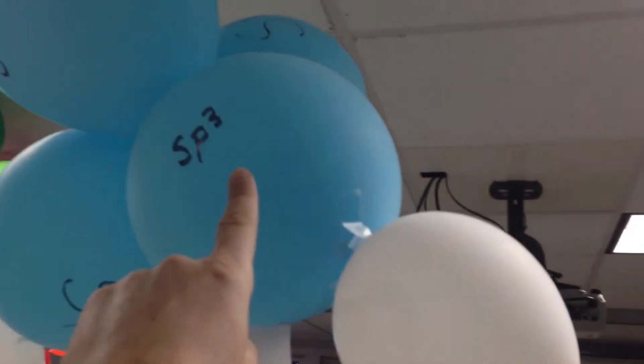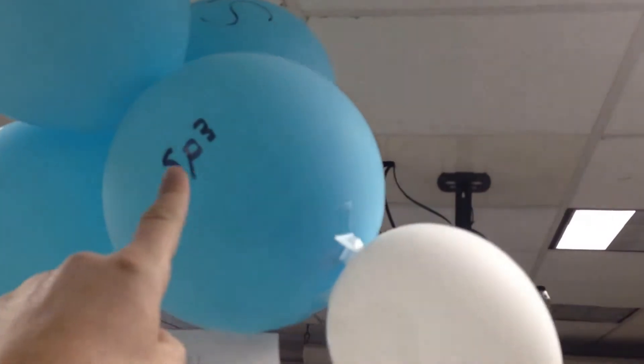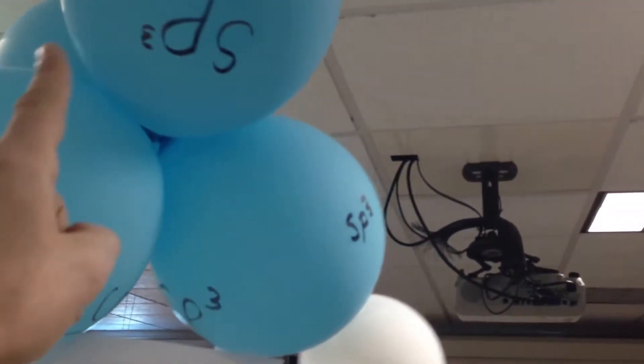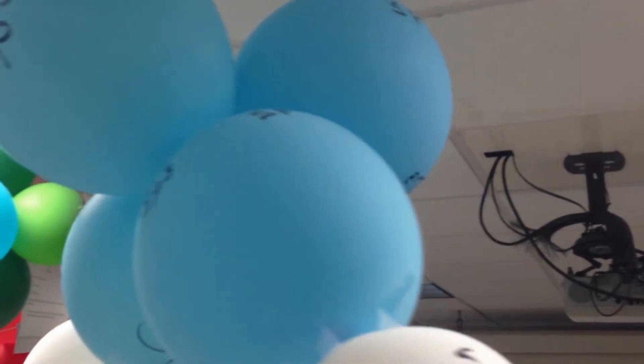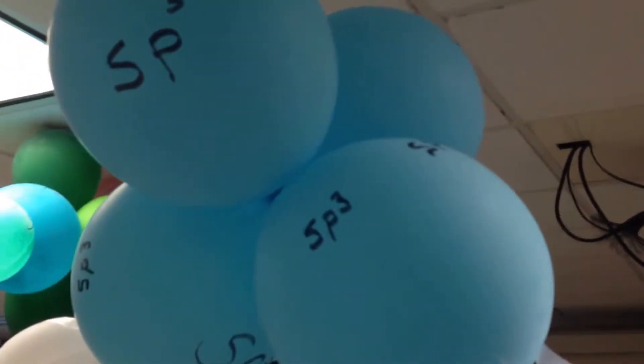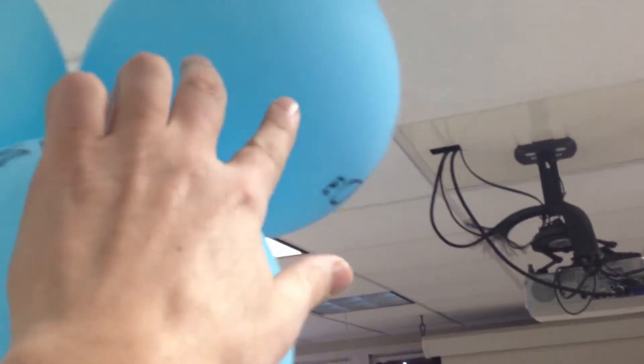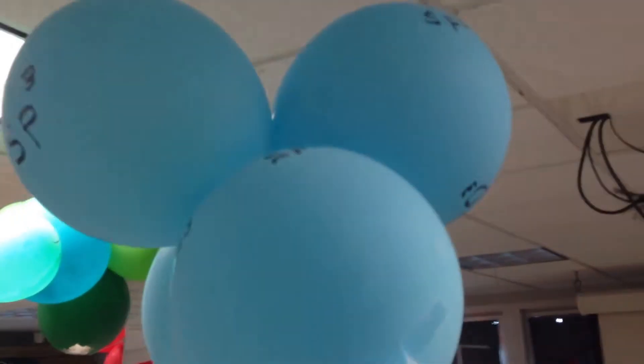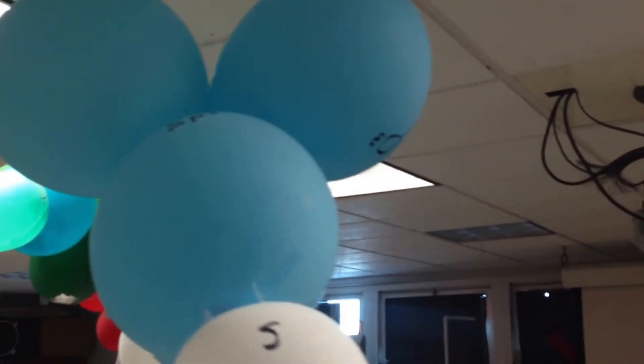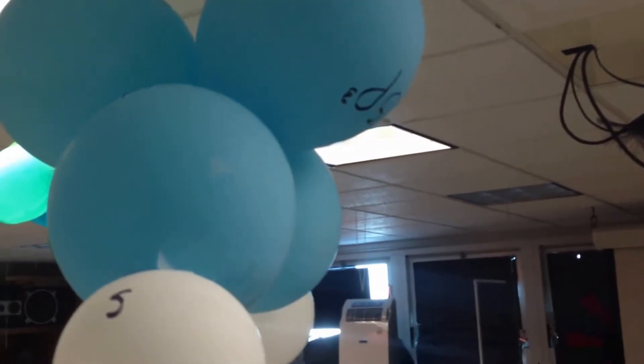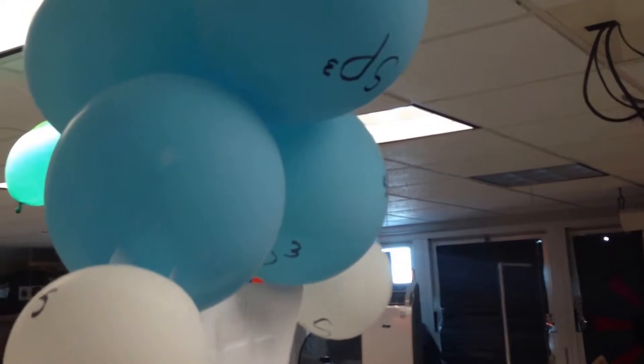This is the hybridized orbital. One s and three p's came together to make four equally shaped balloons or orbitals, and two have lone pairs. This would be a lone pair here, and you'd have another with a lone pair up here. Those two lone pairs keep the basic shape of a tetrahedral in terms of electron domain geometry, but the molecular geometry is where the atoms are.